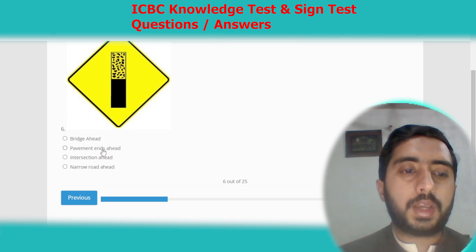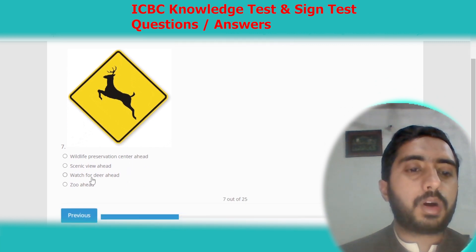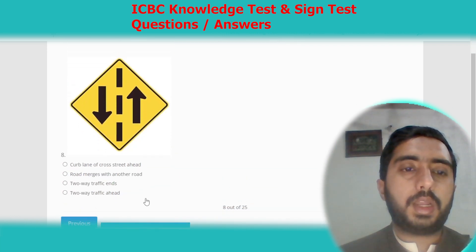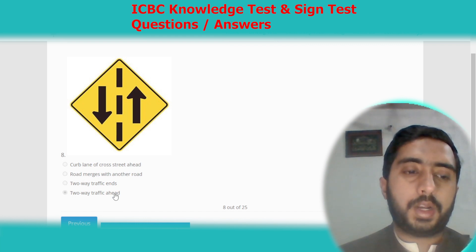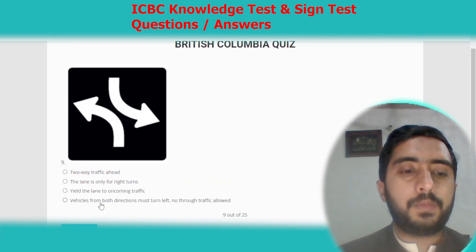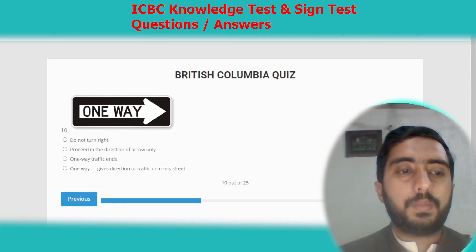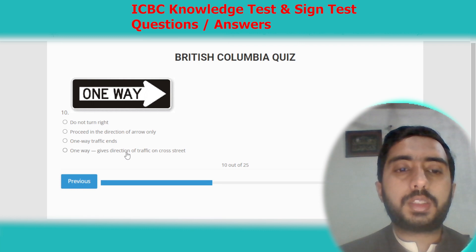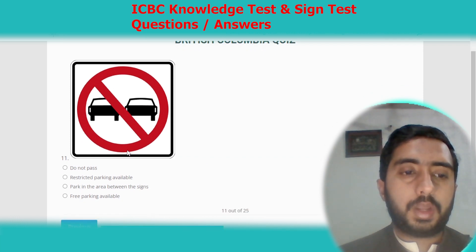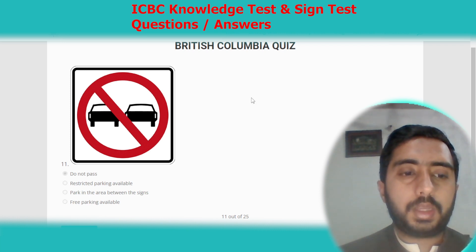Symbol seven clearly represents watch for deer ahead. Option C. Symbol eight represents vehicles in both directions must turn left, no through traffic allowed. Option D. Symbol ten represents one way, giving direction of traffic on cross street. Option D. Symbol eleven represents do not pass. Option A.